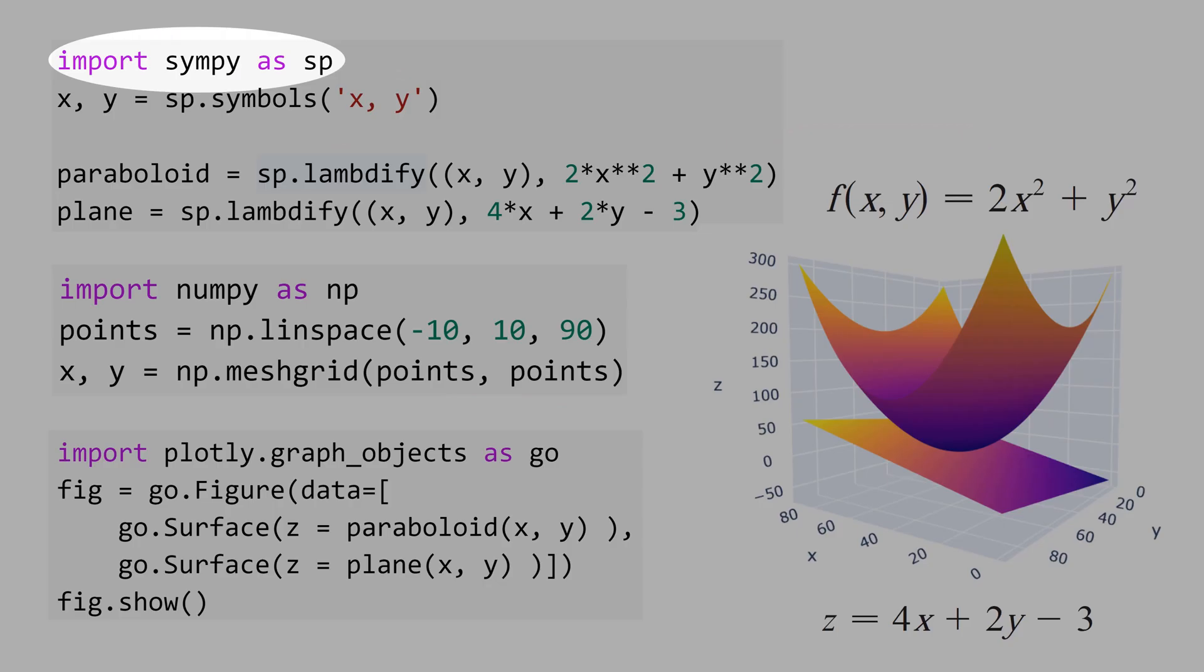Let's import sympy as sp and declare the symbols x and y that you are going to use to construct the function. Let's construct the paraboloid function. We use the term lambdify to create the function, and here we pass the equation of the paraboloid.